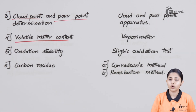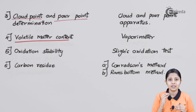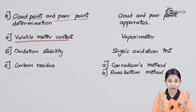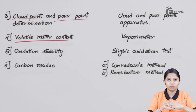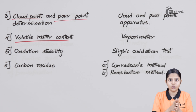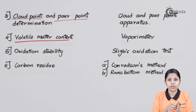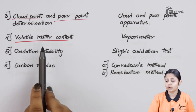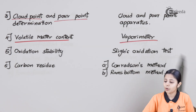The next physical property is volatile matter content. Volatile matter is material that will easily evaporate. If the oil is extremely volatile — for example, if I put 5 litres and 2 to 3 litres just evaporate in an hour — there is no point using that oil, because I need the lubricant to remain between the two friction surfaces to reduce friction. That's why the volatile content of the oil should be low. It is measured with the help of a vaporimeter.